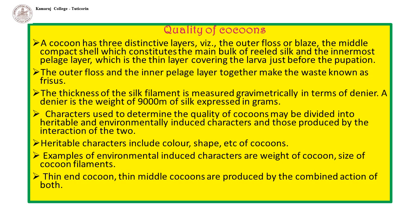Characters used to determine the quality of cocoons may be divided into heritable and environmentally induced characters, and those produced by the interaction of the two. The heritable characters include color, shape, and other physical traits of the cocoons.